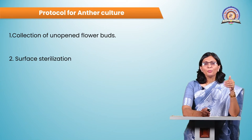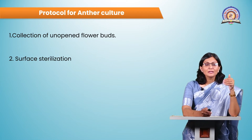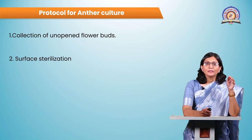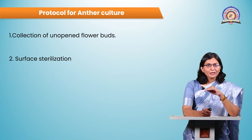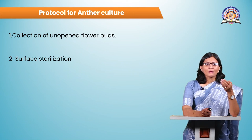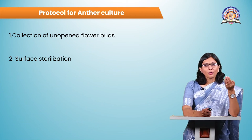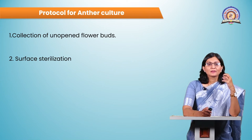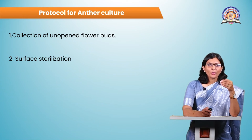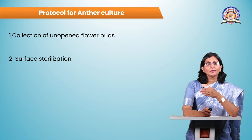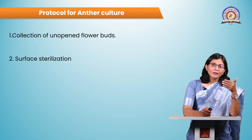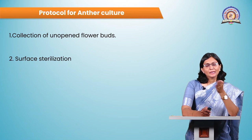The second step is surface sterilization. Surface sterilization is important to remove all microbes from the surface of the unopened flower bud, as contaminants may compete with growing culture cells for nutrition. First, take the unopened floral bud, wash under tap water, wash with Tween 20 solution, then again with running tap water 2–3 times, then wash with distilled water, and take the washed bud into the laminar air flow cabinet for aseptic transfer.